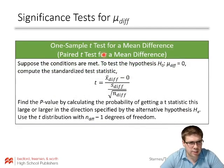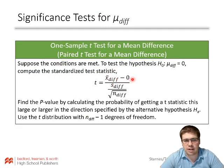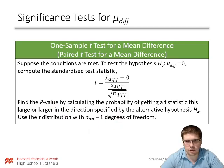Here's what our t-test statistic looks like. We have x-bar difference — the mean of our sample differences — and we see how far that is from zero, then divide by the standard error to get a t-test statistic. We ultimately calculate a p-value using n minus 1 degrees of freedom.